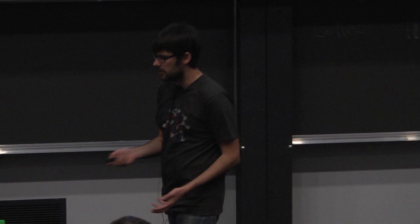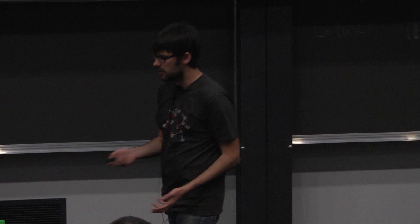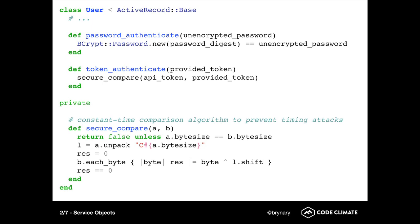And service objects, I like them to have a short life cycle. So they might be stateless, or because they have a short life cycle, you just instantiate it and use it, then the state is not long-lived anyway. So we'll look at an example. In this case, we have a user class, and the user class has two different ways for authentication to take place. So you can do authentication with a password, and that's going to use bcrypt, or you can do authentication with a token coming over an API, and that needs to be compared using this secure compare method hanging out at the bottom of the class.